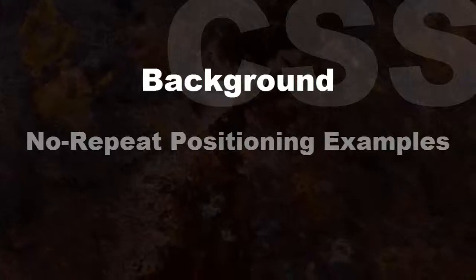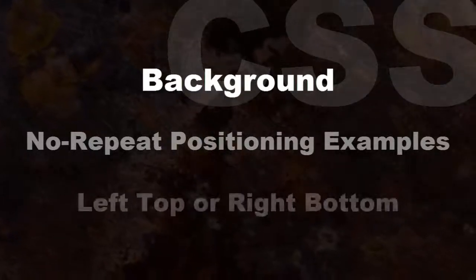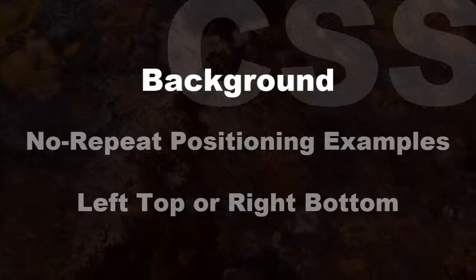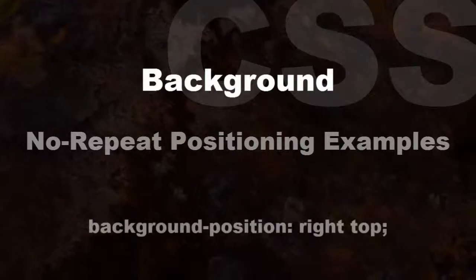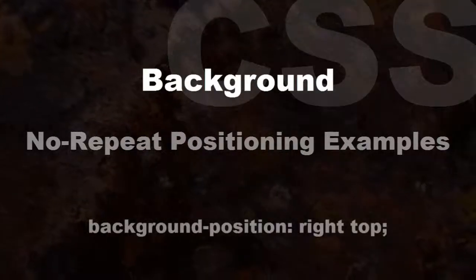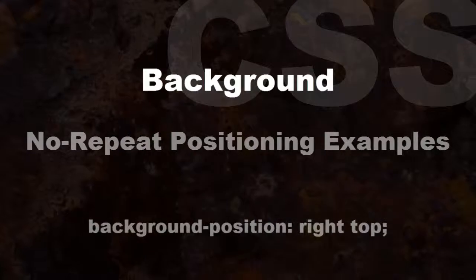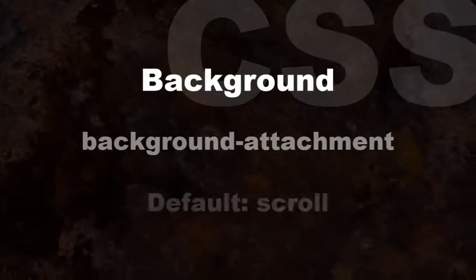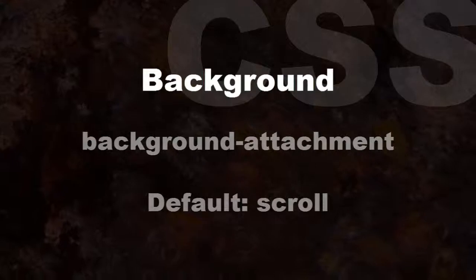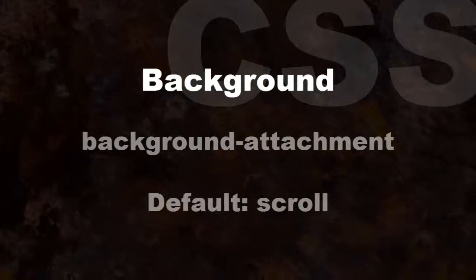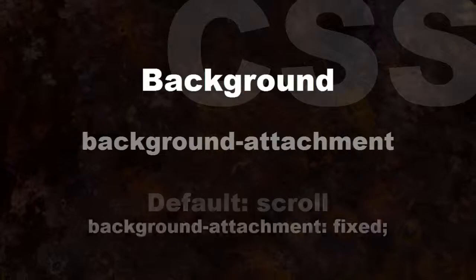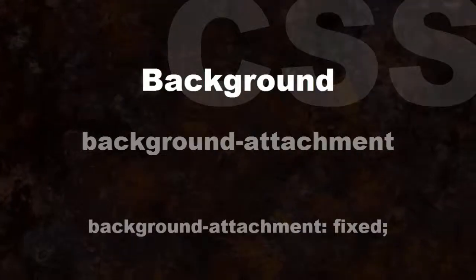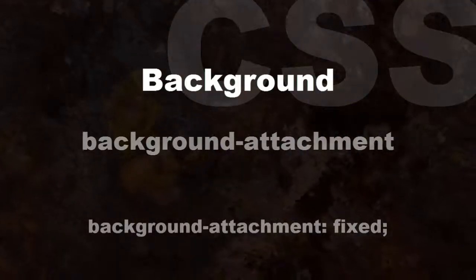With no-repeat, the background image can be set to a named position, like left top or right bottom. For example: background-position: right top;. The background-attachment property controls the position of the background image as you scroll down the page. Scroll is the default; fixed keeps the image stationary. For example: background-attachment: fixed;.